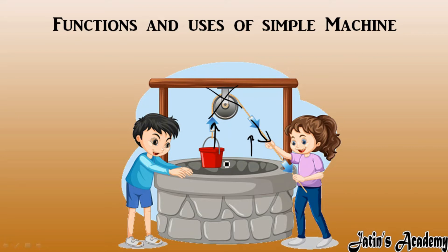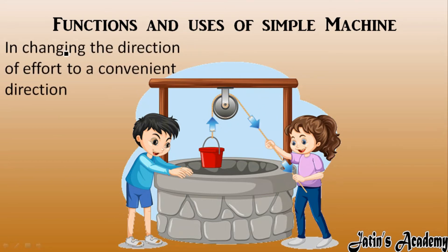Applying force in the upward direction is inconvenient to a human being. That's why we use a pulley system — we apply force in the downward direction and get force in the upward direction, so the bucket comes out easily from the well. The function here is changing the direction of effort to a convenient direction; this machine is changing the direction of the force.